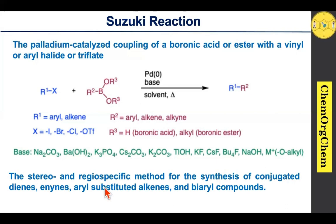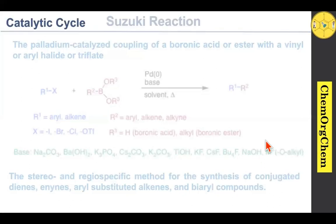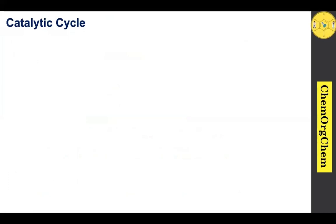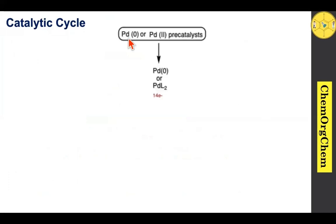The Suzuki reaction is one of the important carbon-carbon coupling reactions useful for the preparation of stereo- and regio-specifically conjugated dienes, enynes, and aryl-substituted alkenes. Apart from this, this method is also highly useful for biaryl compounds. Let's see the catalytic cycle to better understand how this reaction works mechanistically.